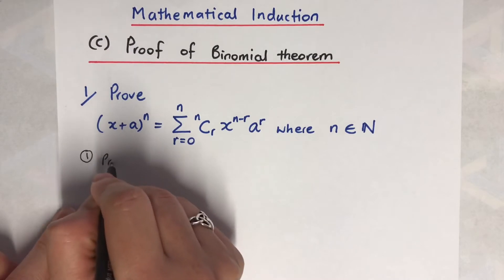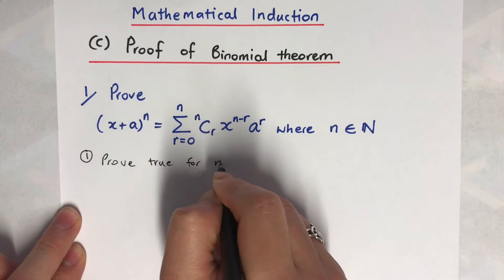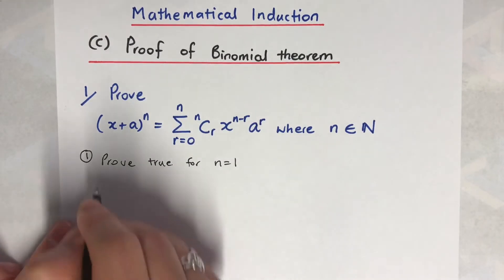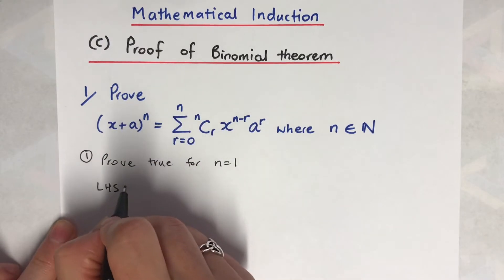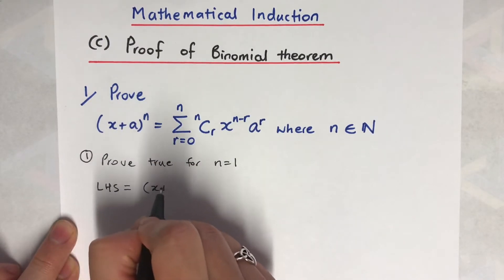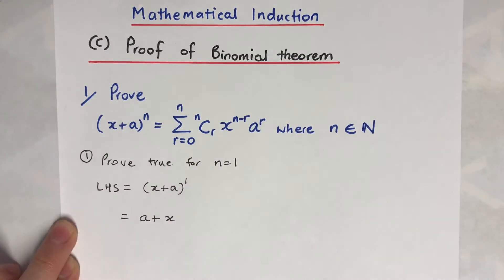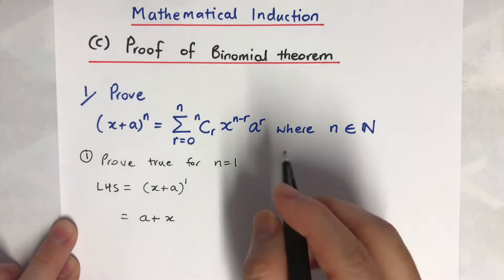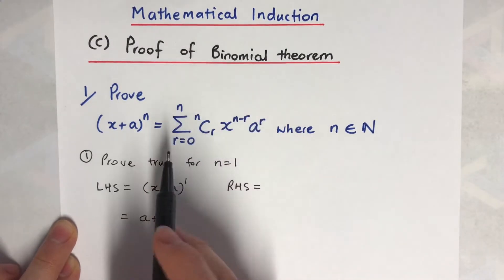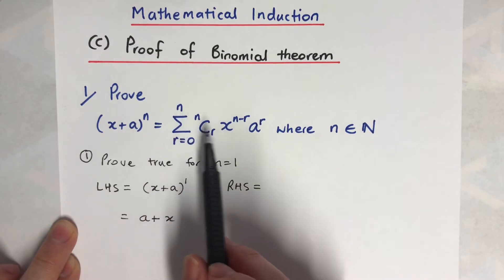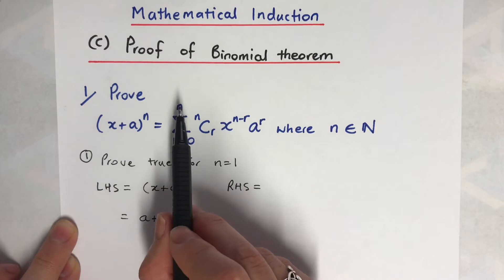First step: prove true for n equals 1. I'm going to go left hand side — that's my left, that's my right. X plus a to the power of one, I'll just write it as a plus x, it's the same. And that equals the right hand side. Now this is the sigma notation, so I have to put n equals 1.